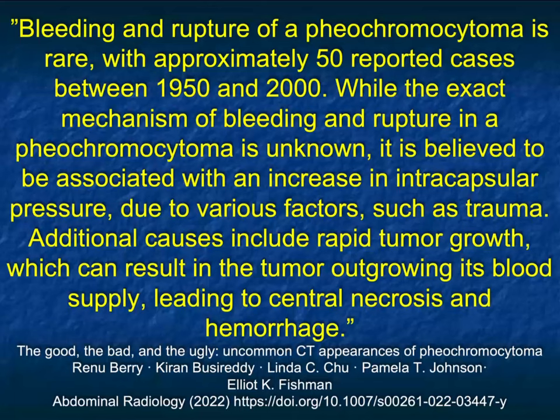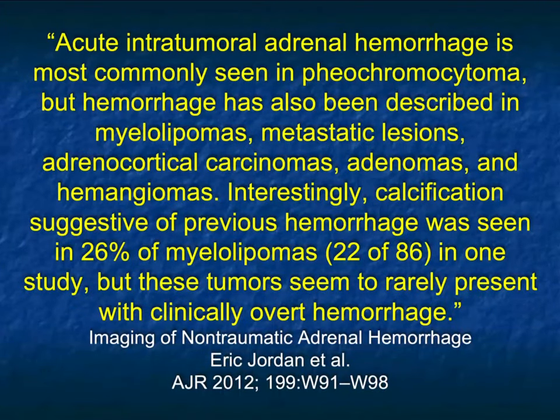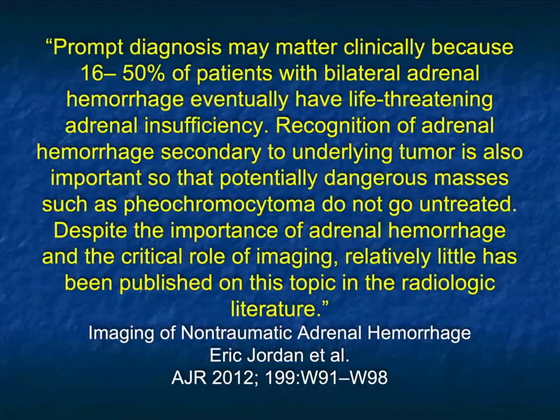Bleeding and rupture of pheos is rare, but it's still the most common tumor to do so. Adrenal cortical carcinomas occasionally can bleed, though it's rare. Metastases — renal cell, melanoma — it's very rare. Also consider myelolipomas, especially if lipid-poor or once bled. If there's no primary tumor, look for one. ACC is a consideration. Notably, adenomas and hemangiomas can bleed as well, making this a challenging diagnosis.